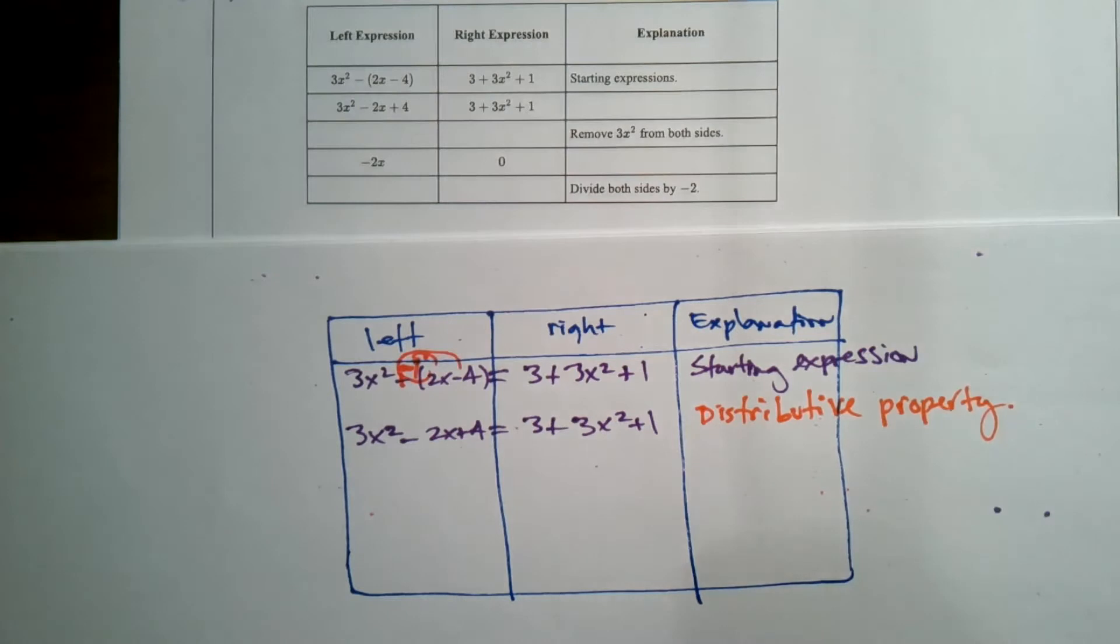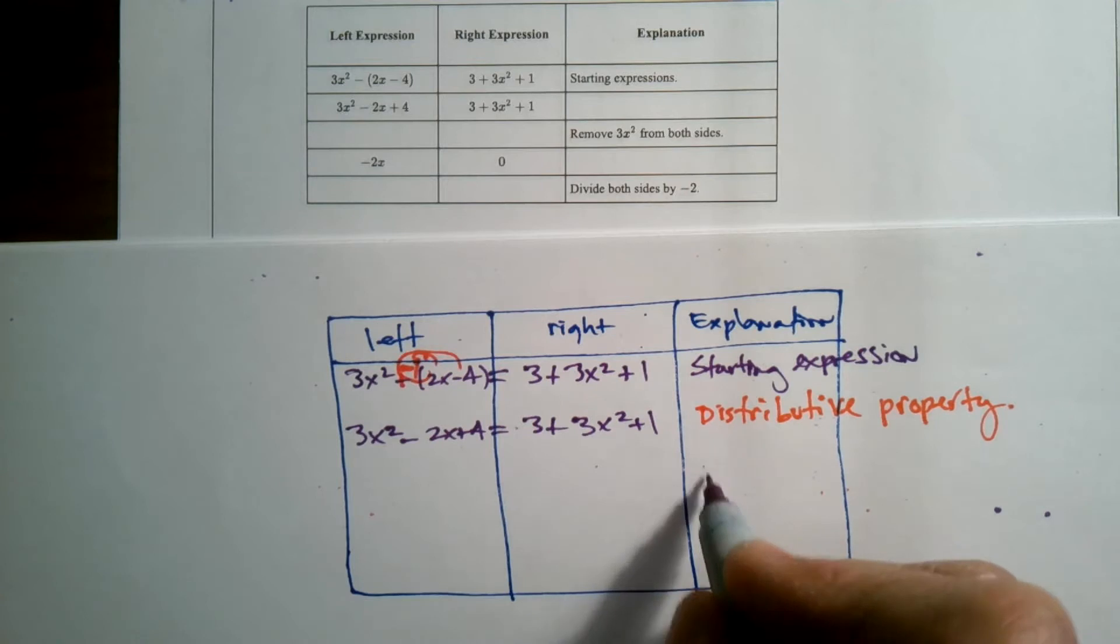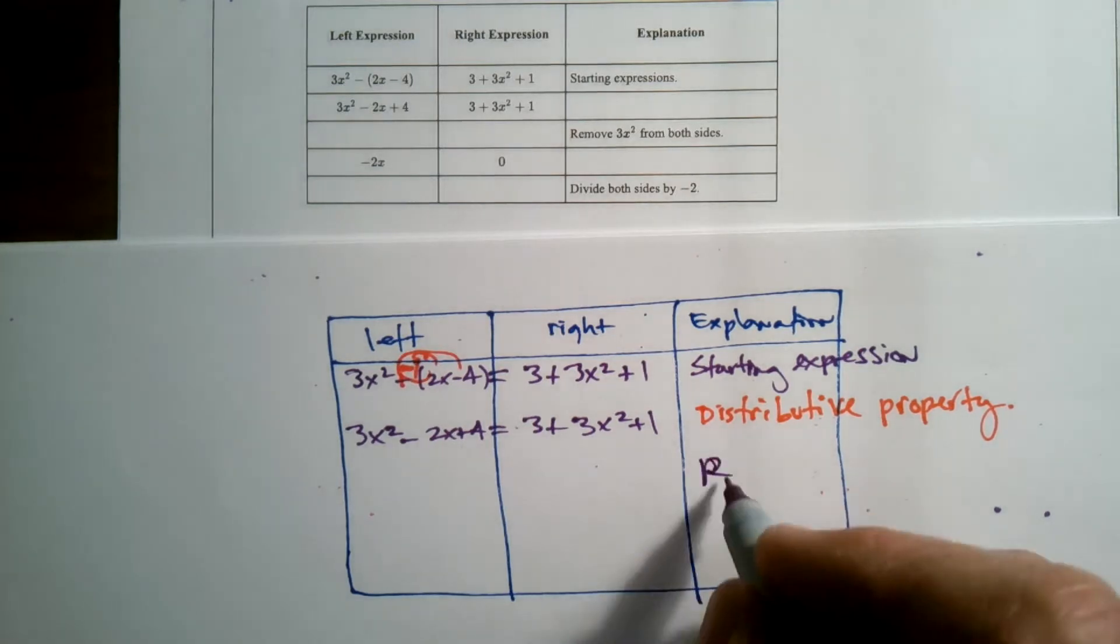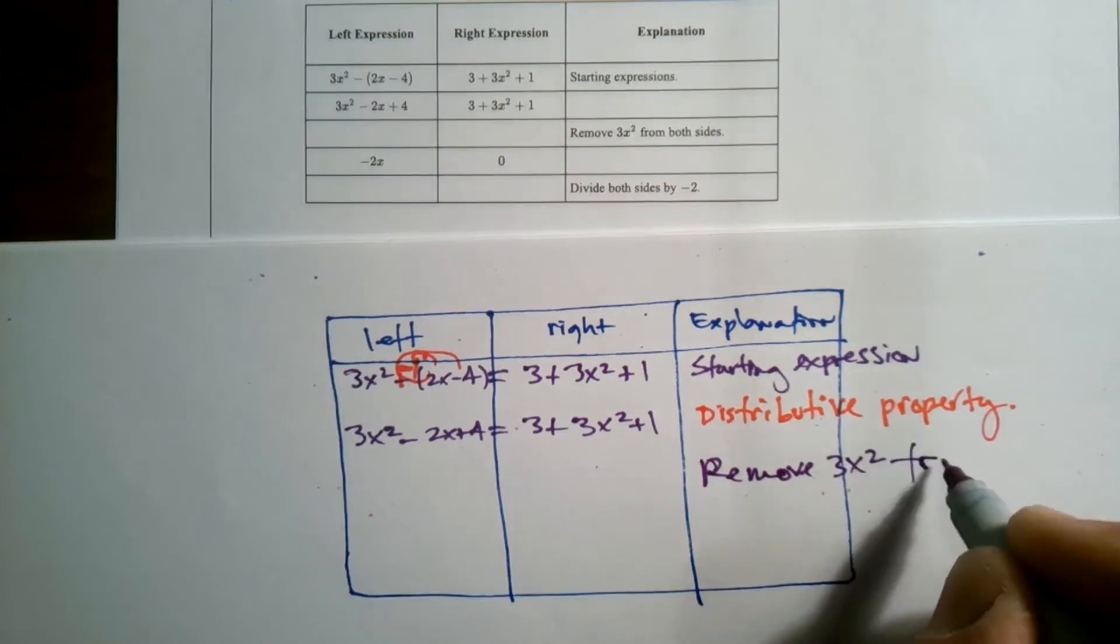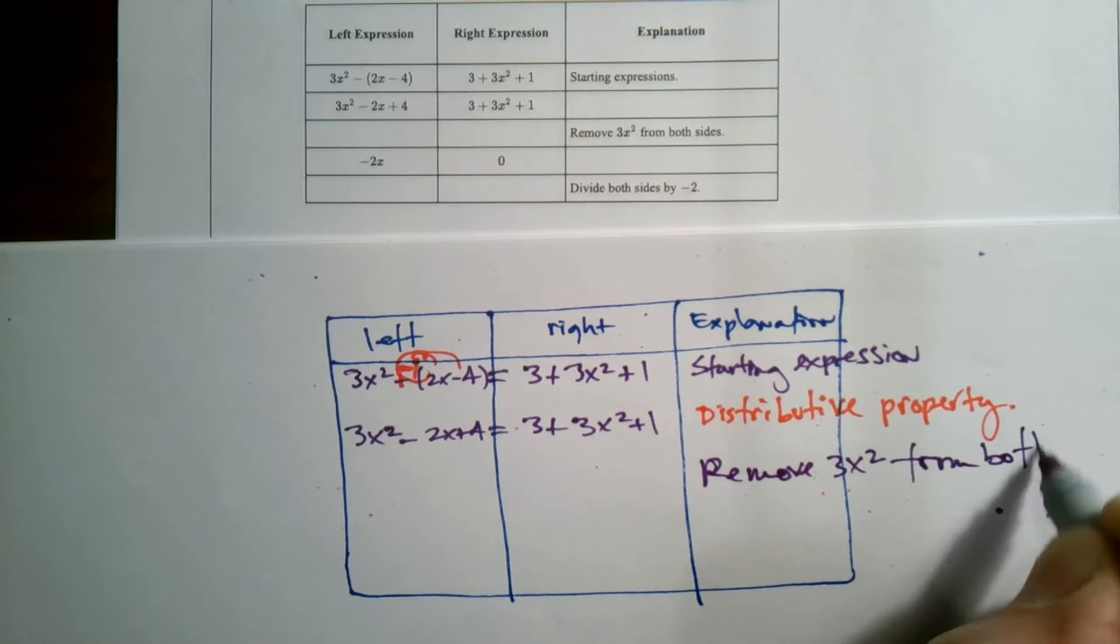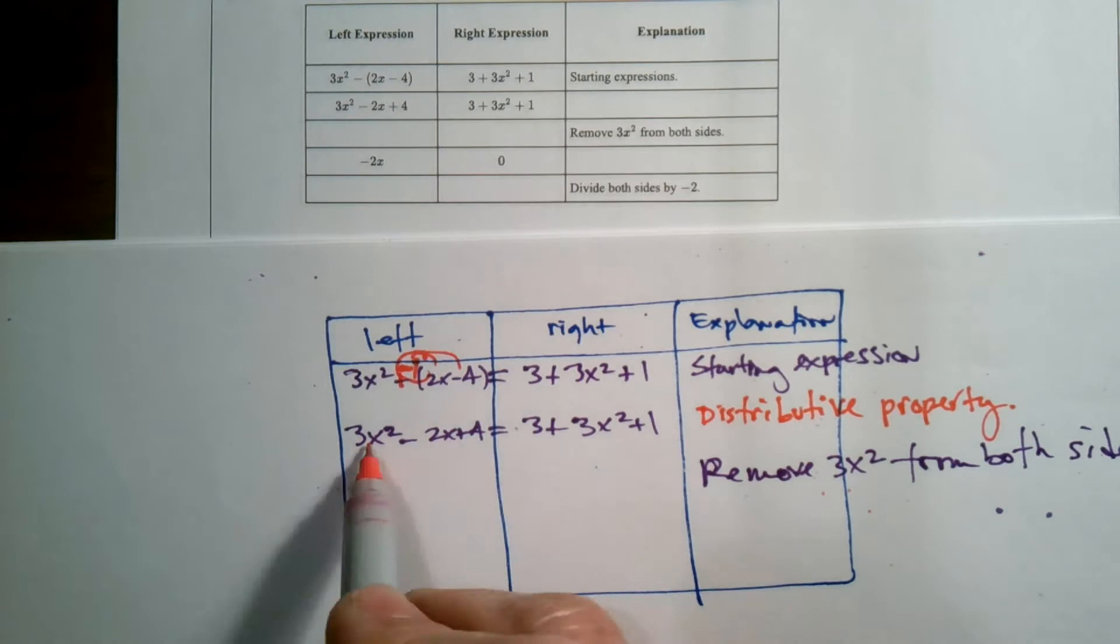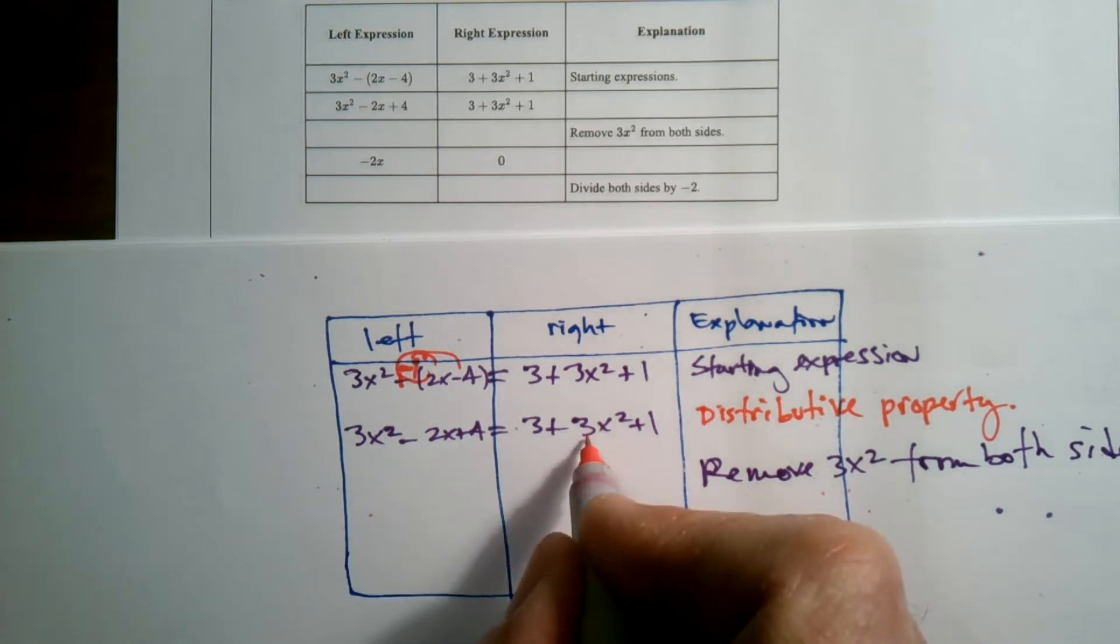Okay. Then the next thing is there is no steps written, but the explanation is to remove 3x² from both sides. So what does that mean? What does that look like, right? So we have a 3x² on this side and on that side.